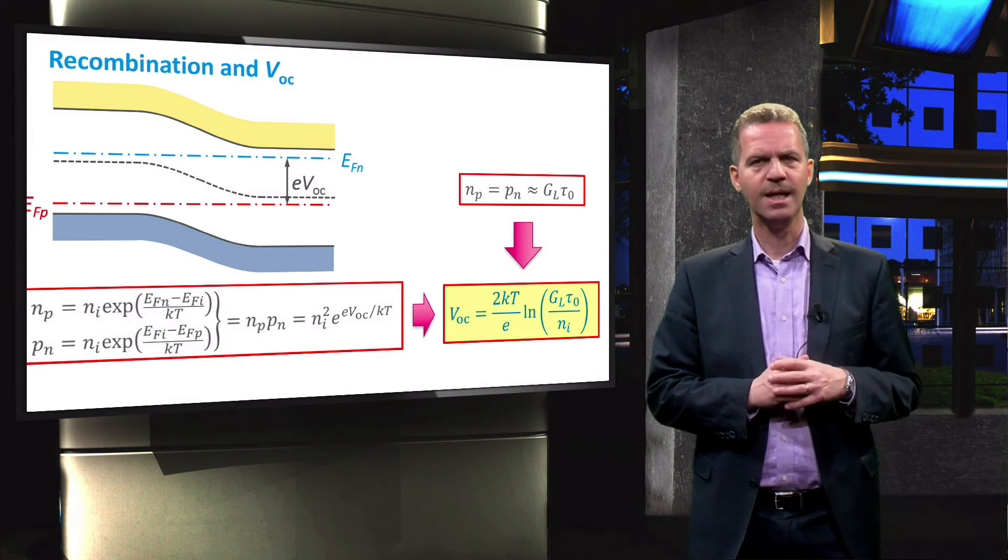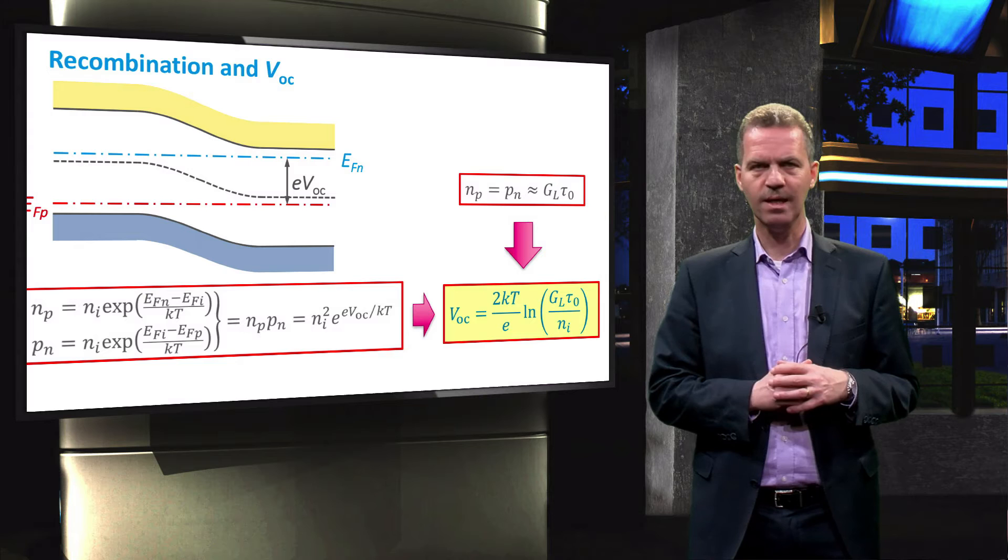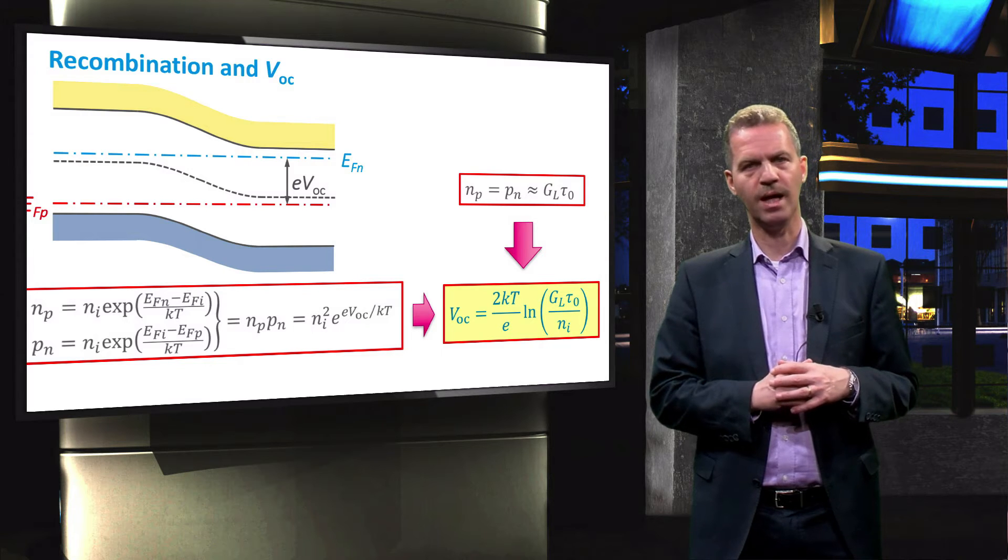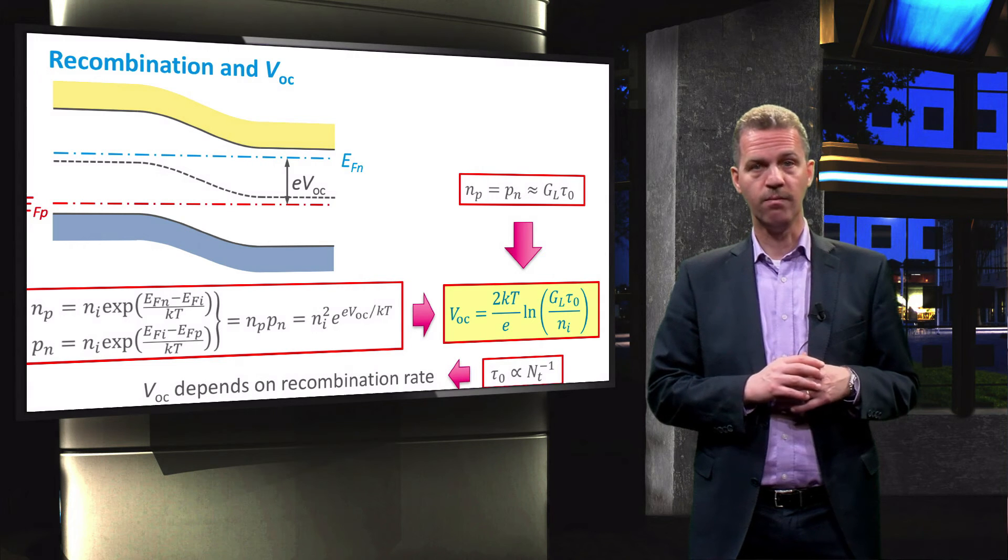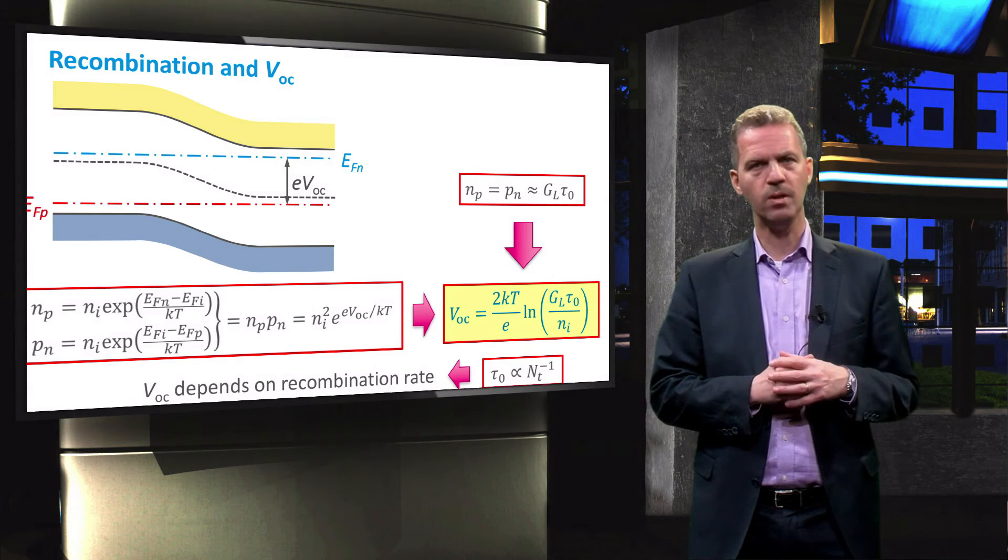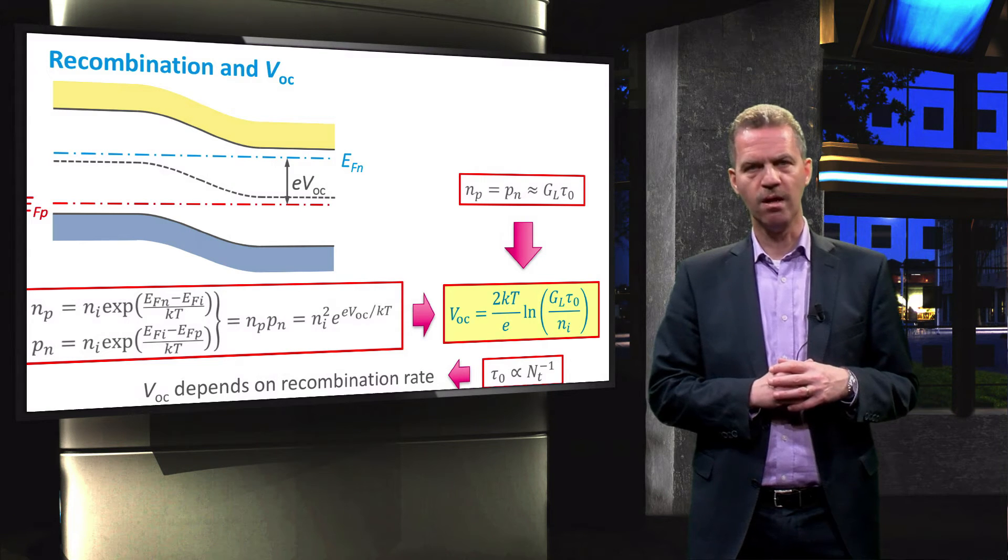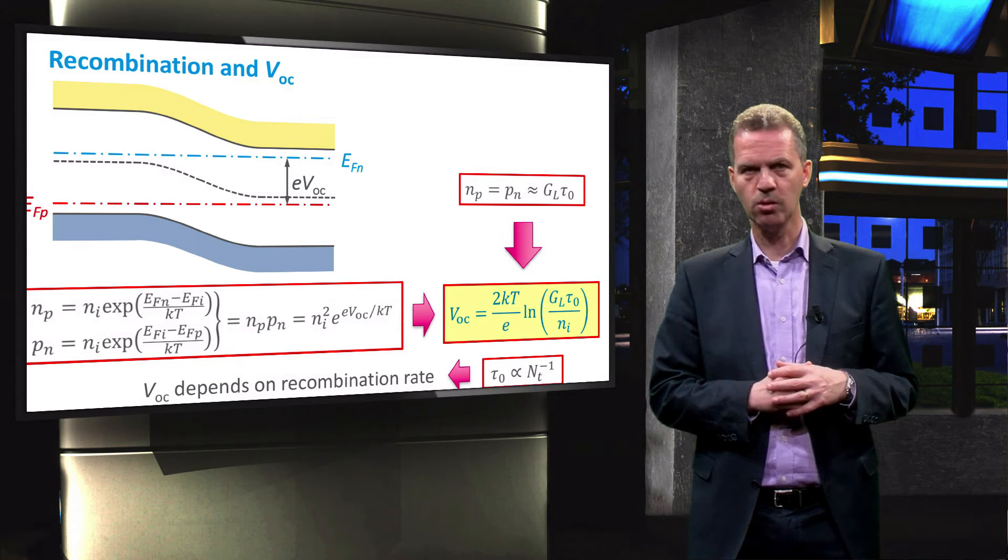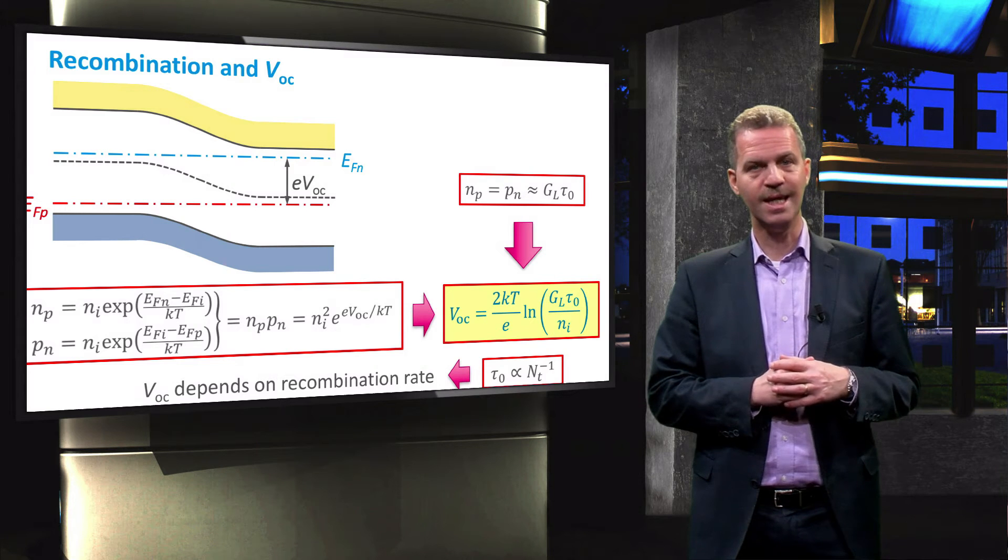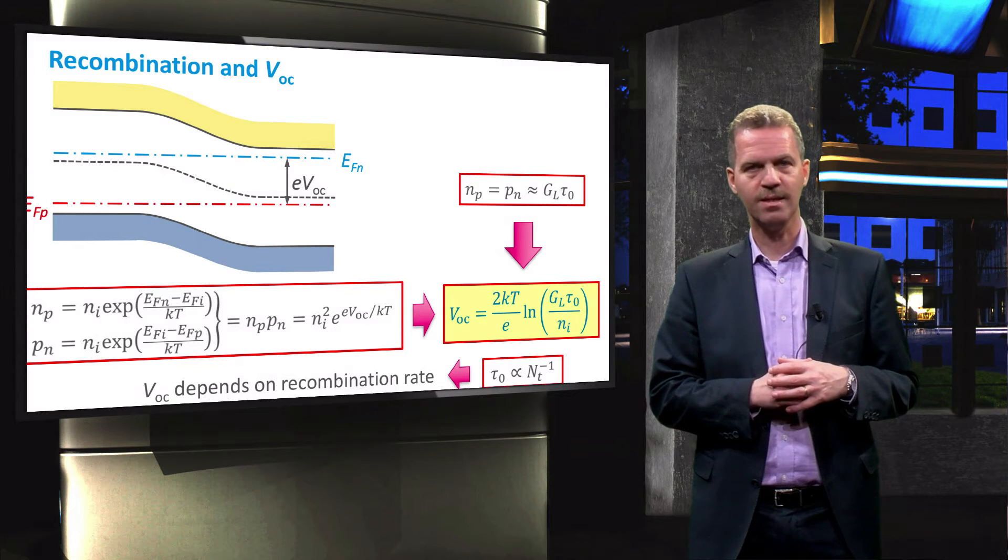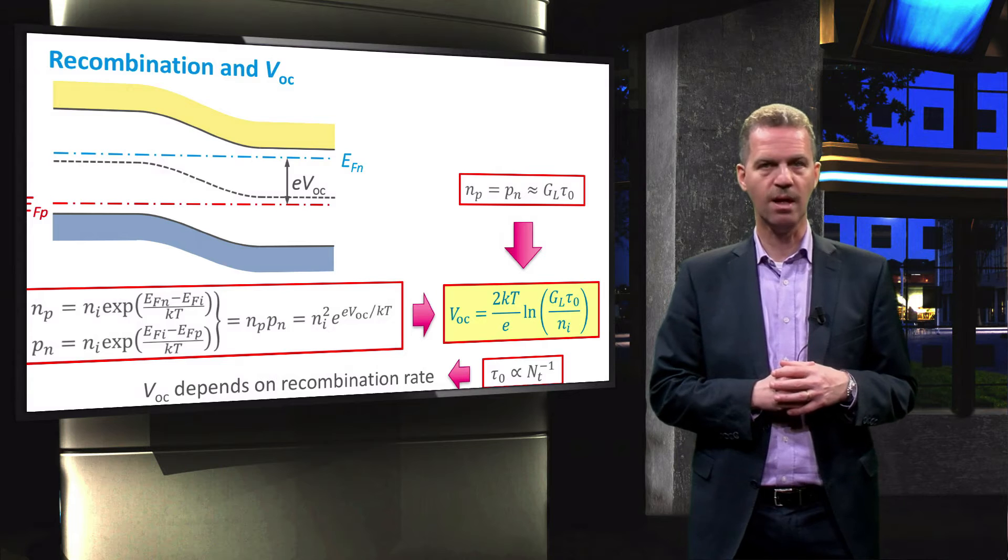We now see that the VOC is directly related to the lifetime that characterizes the recombination. That can be easily seen for Shockley-Read-Hall or SRH recombination for which the lifetime is inversely proportional to the defect density. In that case, we can clearly see that the defect density affects the VOC directly.